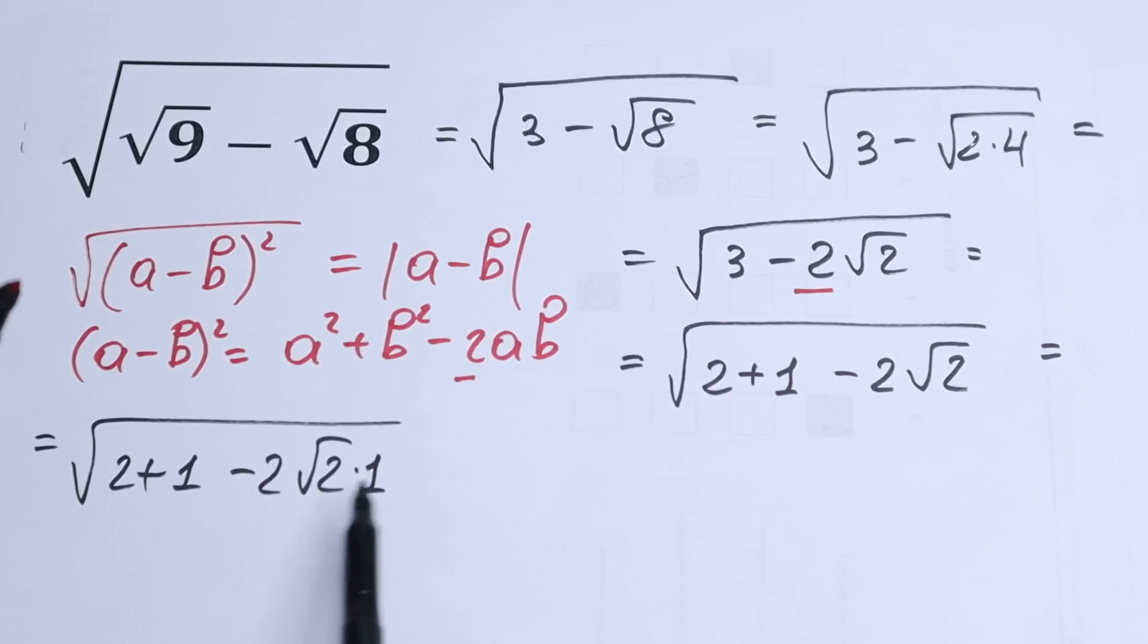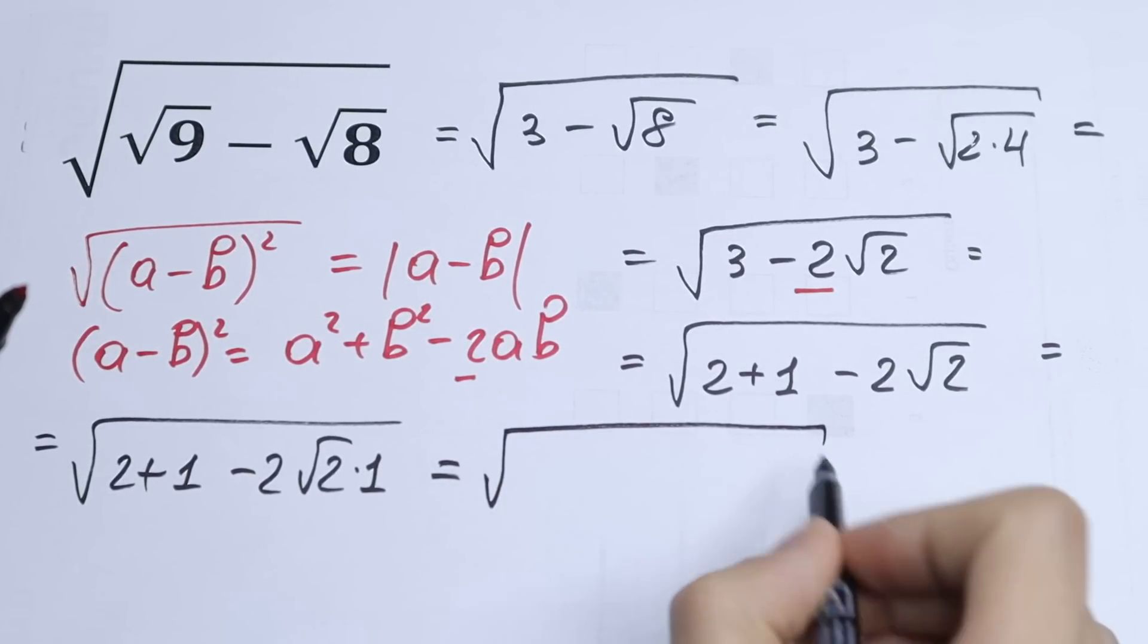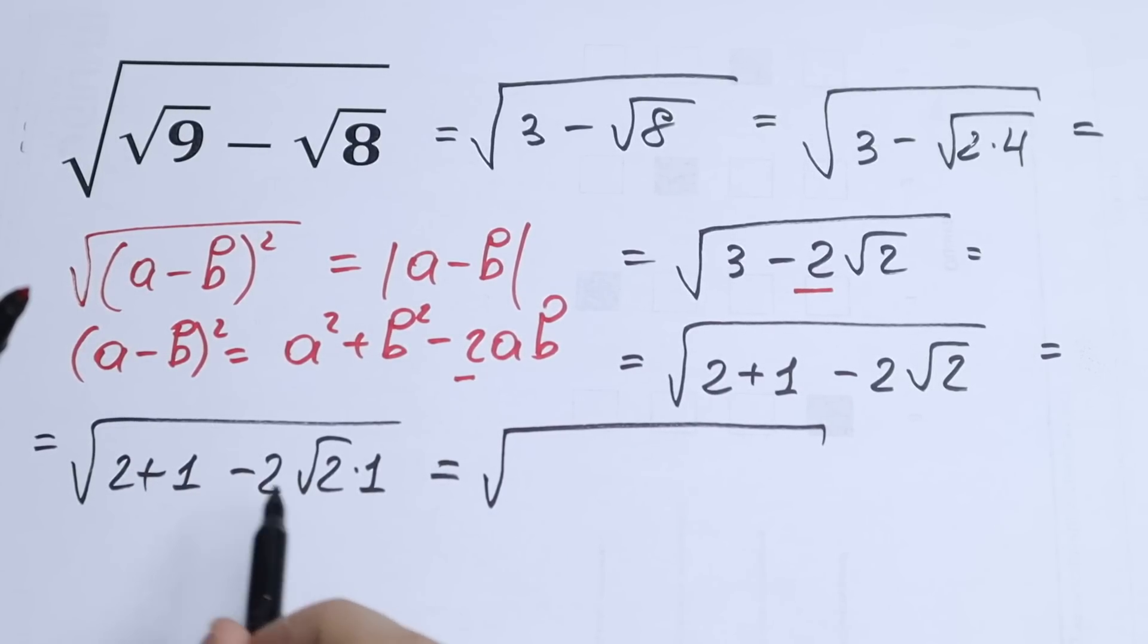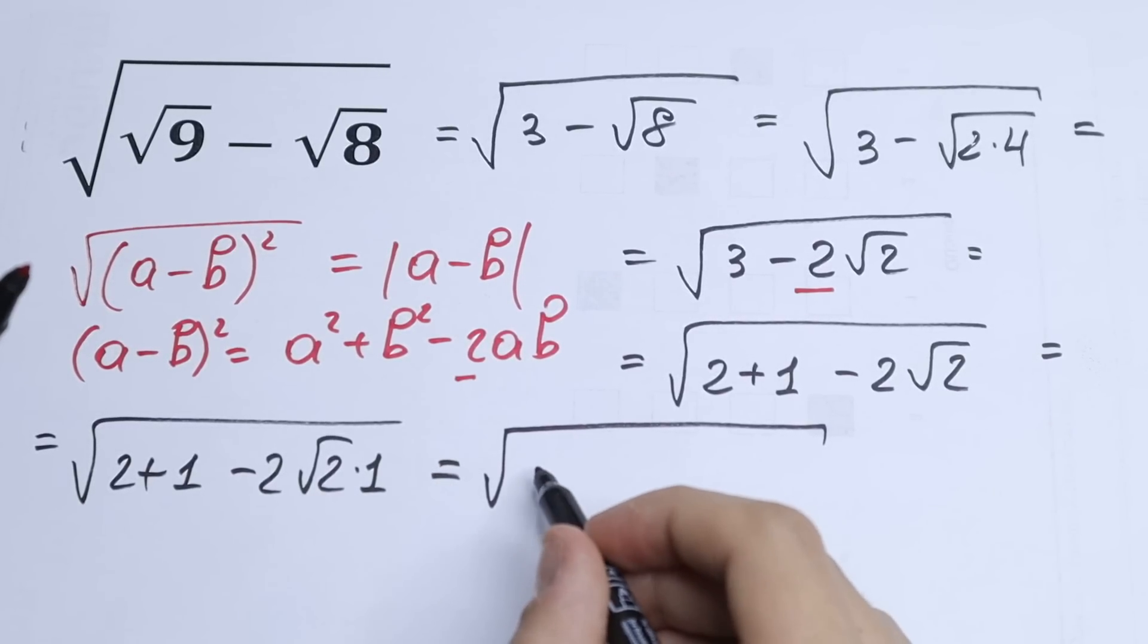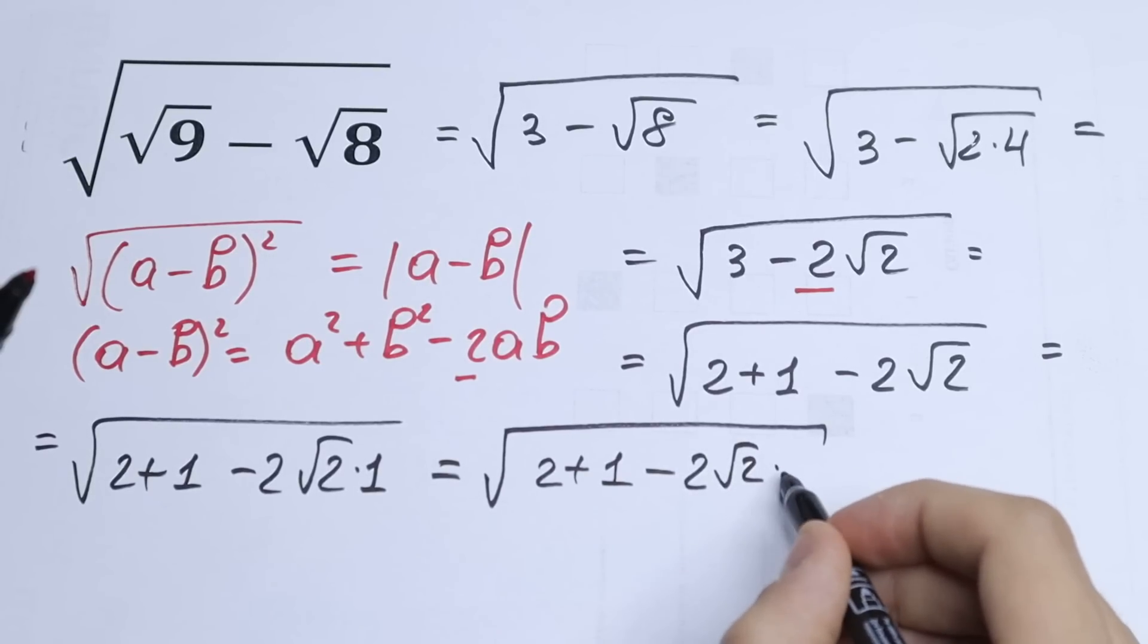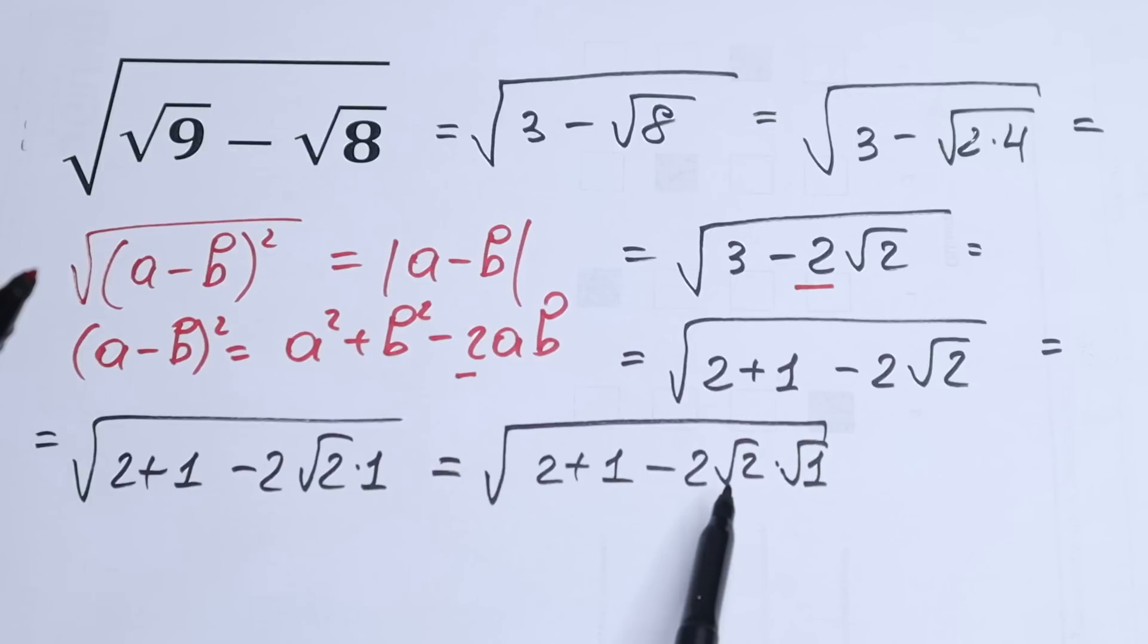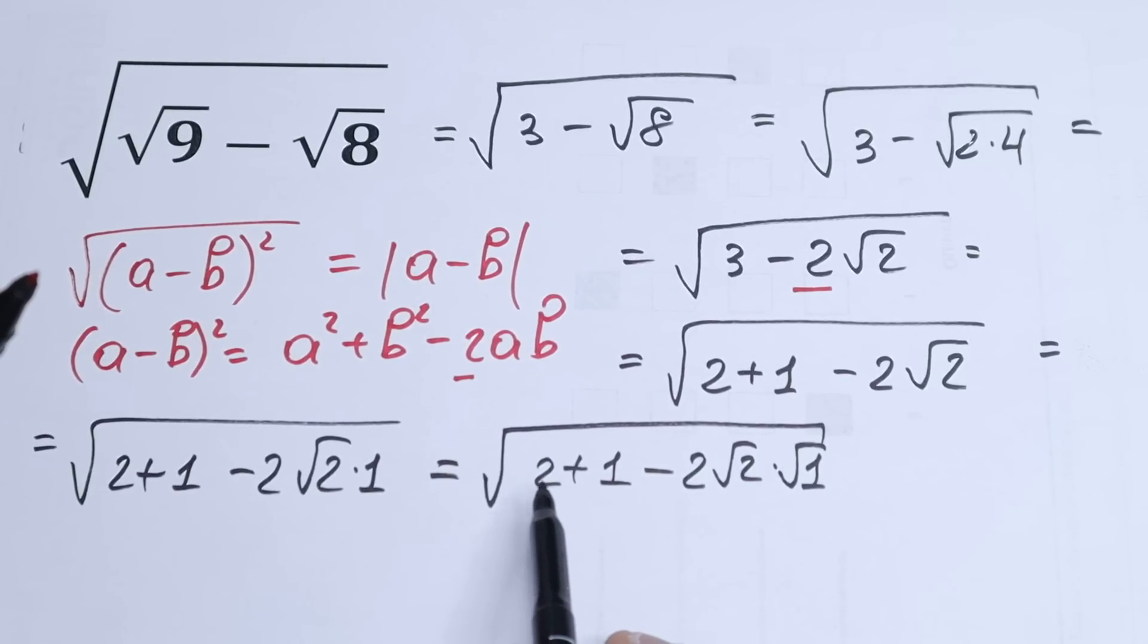For sure, of course, nothing change. Equal to √(2 + 1 - 2√2). And we can write this 1 as √1. 2 + 1 - 2√2 times √1. So we have really good case, because we have 2. This will be our a, this will be our b.